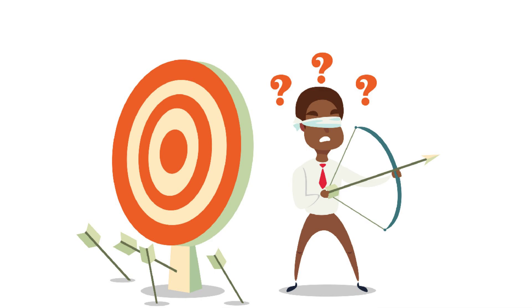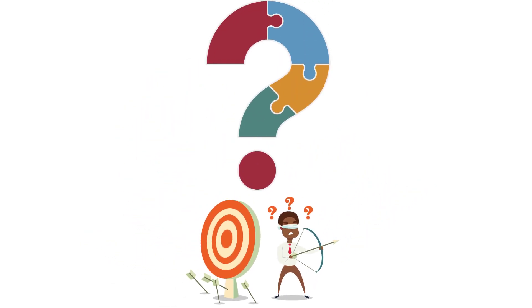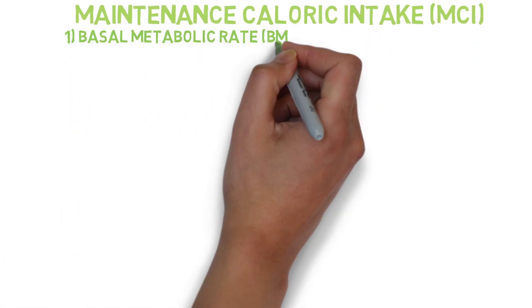To calculate the weight loss calories per day, we first need to find out how many calories we need to consume per day to maintain our current weight, also known as your maintenance caloric intake, which we will be referring to as MCI. To do this there are two steps involved. First we need to find your basal metabolic rate, which is BMR for short.